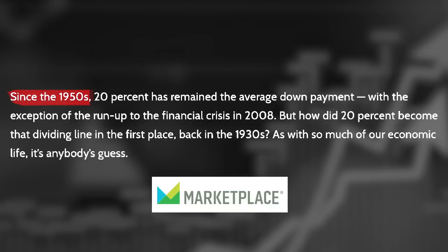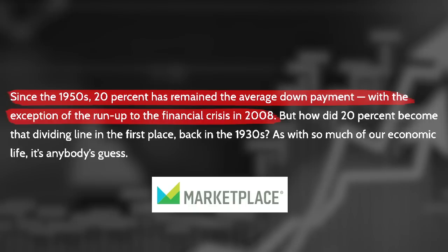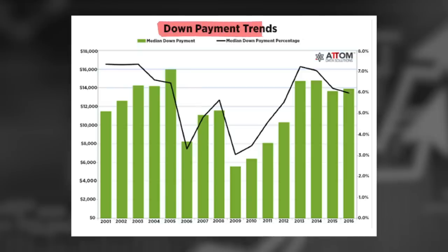Since the 1950s, the 20% has remained the average down payment, with the exception of the run-up to the financial crisis in 2008. In other words, the down payment to buy a home all the way up to 1998 was always around 20%, if not higher, throughout U.S. history. Then, in 1998, the amount of down payment required as a percentage got lower and lower. We can see this in a chart of down payment trends starting in 2000 — they're about 7%. So from 1998 to 2000, they've gone from 20% all the way down to 7%, and they bottomed out around 4% in 2006.